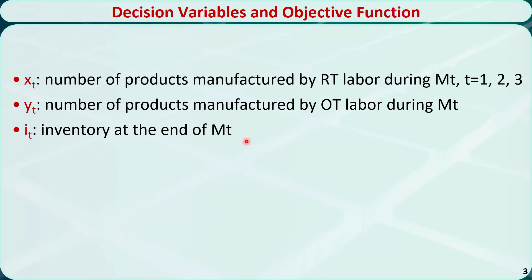For the decision variables, we let xt be the number of products manufactured with regular-time labor during month t, where t equals 1, 2, and 3. Let yt be the number of products manufactured with overtime labor during month t. Let it be the inventory at the end of month t.